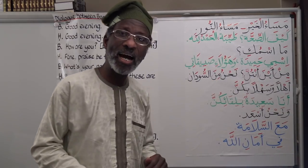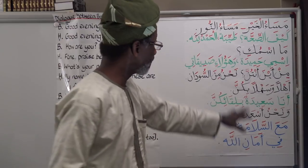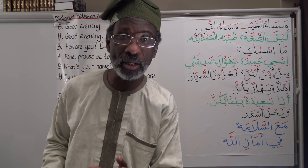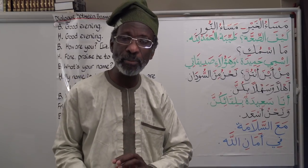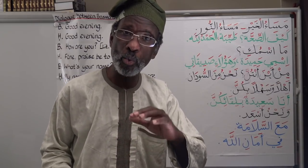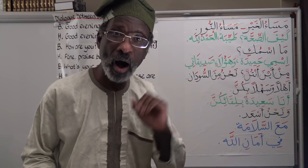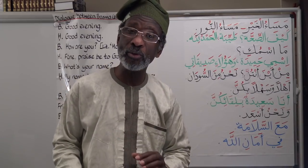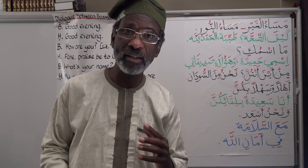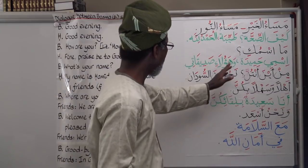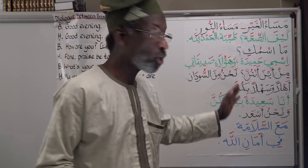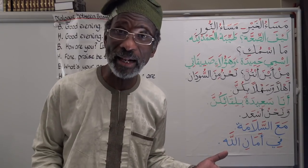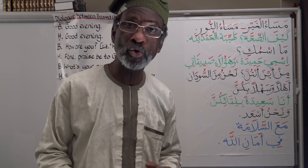'Wa haa ulaa'i' — and these are. Remember 'haa ulaa'i' is for three or more human plurals, regardless of gender, just as 'ulaaika' meaning 'those are' is used for three or more humans regardless of gender. 'Wa haa ulaa'i sadiqati' — and these are my friends. 'Sadiqati' is the plural of 'sadiqatun', the feminine form of friend.